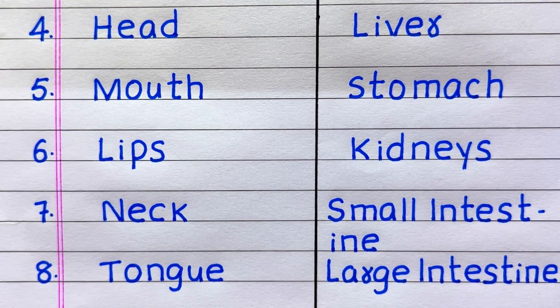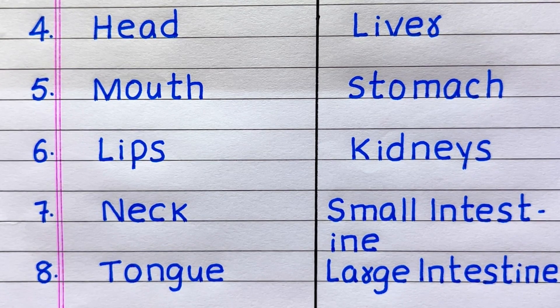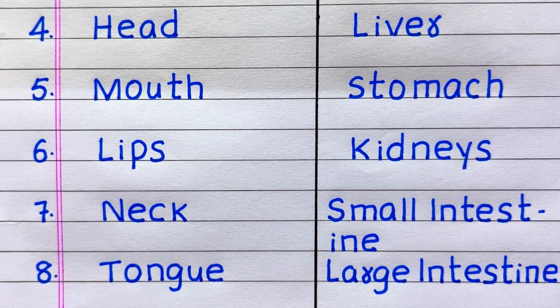The fourth name of an internal organ is liver. Fifth, stomach. Sixth, kidneys. Seventh, small intestine. Eighth, large intestine.